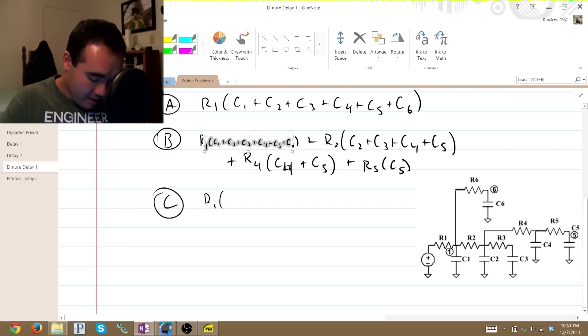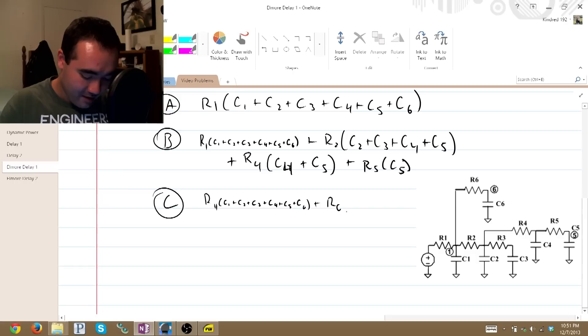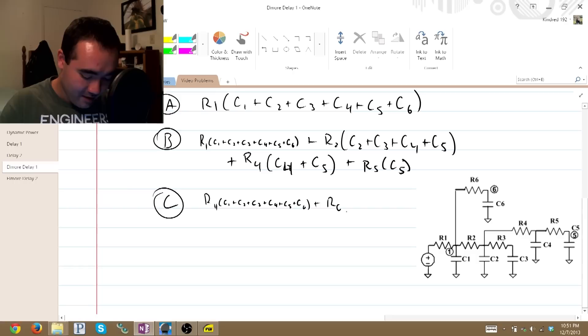There you go. So it is R1 times that guy plus R6 times C6. And that's it. You're done.